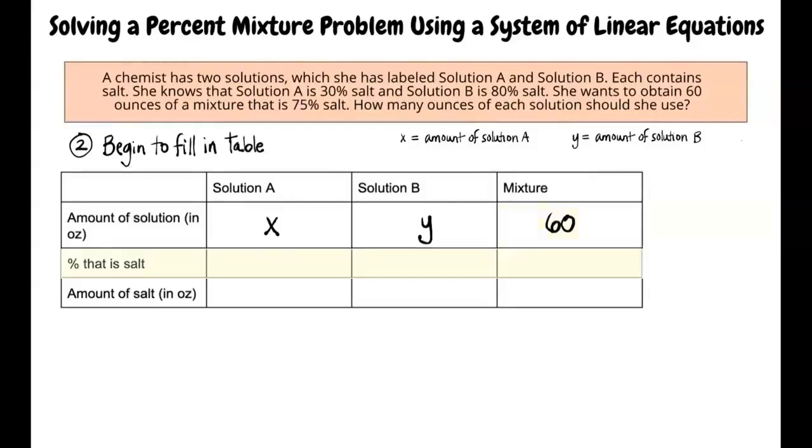The second row is for the information about the percent salt in each solution. It was given that solution A is 30% salt. This box is the percent salt in solution B. It was given that solution B is 80% salt. What will be put in the last box in this row? There should be 75% in that box because the 60 ounce mixture should have 75% salt.